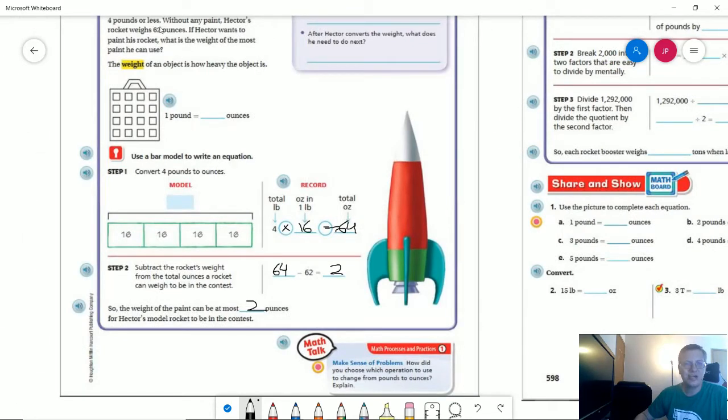Oh I see. So the starting weight was 62 ounces, the most it's allowed to weigh is 64. That makes a little bit more sense.